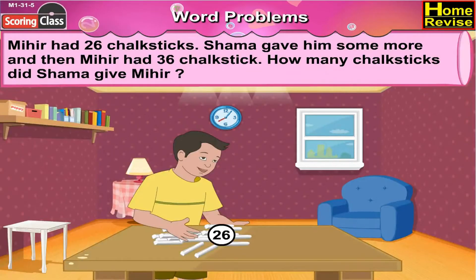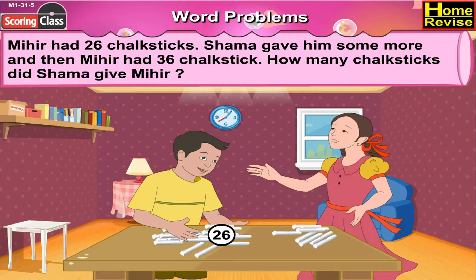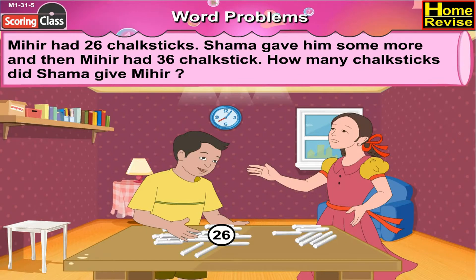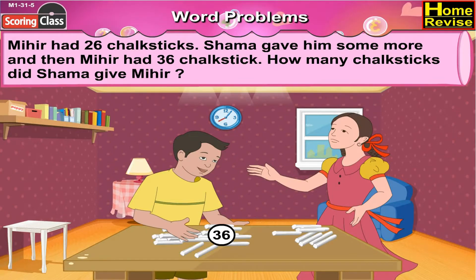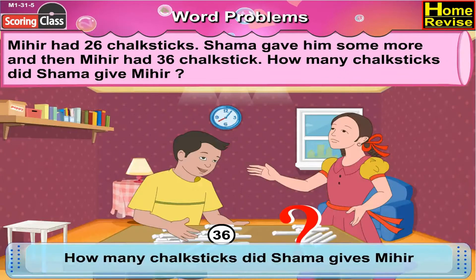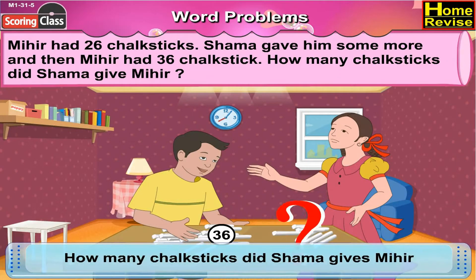Mihir had 26 chalk sticks. Shama gave him some more and then Mihir had 36 chalk sticks. How many chalk sticks did Shama give Mihir?